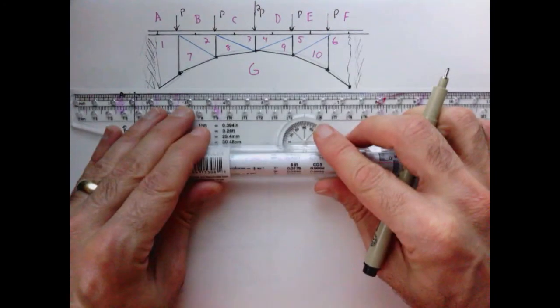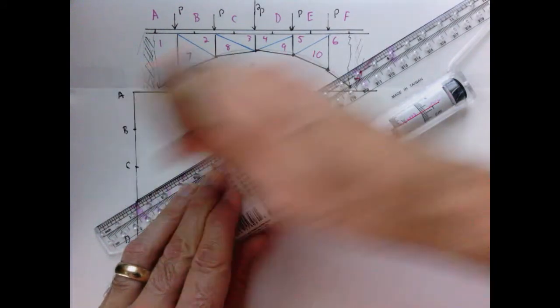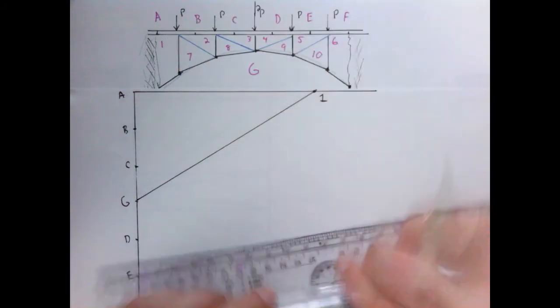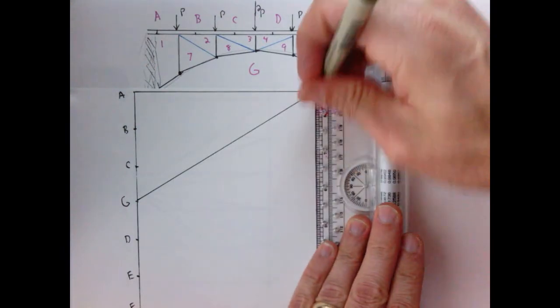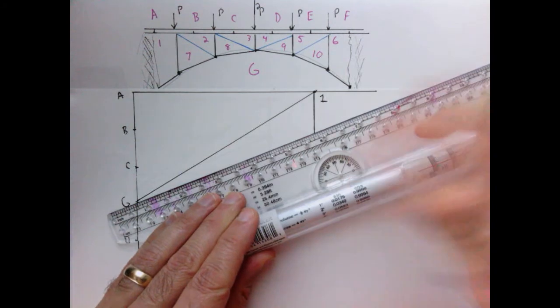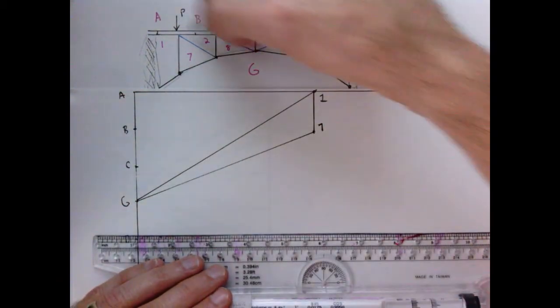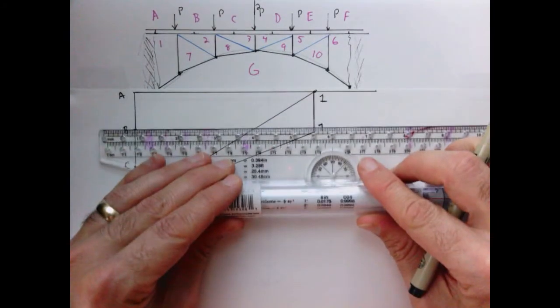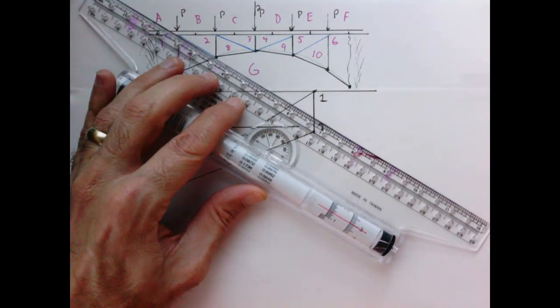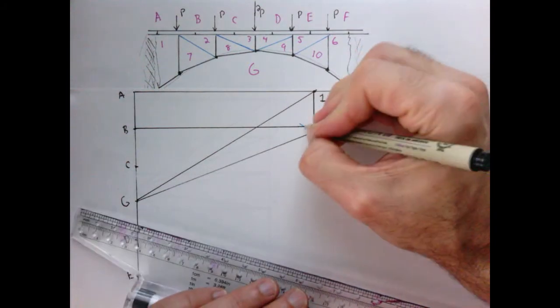We're going to start off very similar as before, coming out of A with a horizontal line, coming out of G at this angle. So there's point 1. Now we have to be a little bit careful. 1 is connected to 7 through a vertical line. G is connected to 7 through this angle. So there's point 7. 7 is connected to 2 through this angle, and 2 is located horizontally from B. So there's point 2.